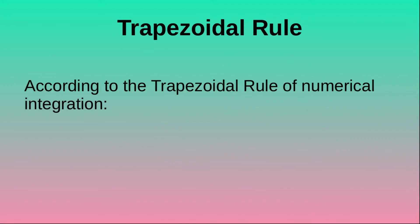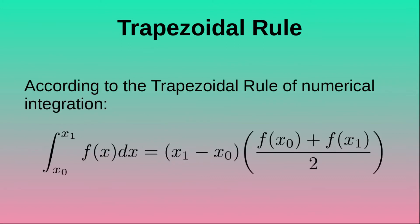According to the trapezoidal rule of numerical integration, the integration of f dx where the limit of integration runs from x0 to x1 is equal to x1 minus x0, whole multiplied by f(x0) plus f(x1), whole divided by 2.